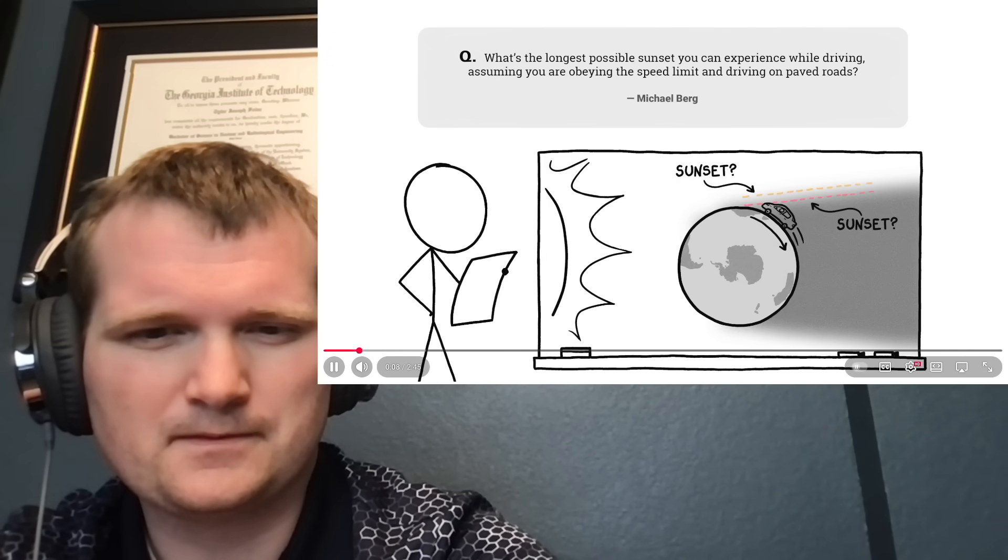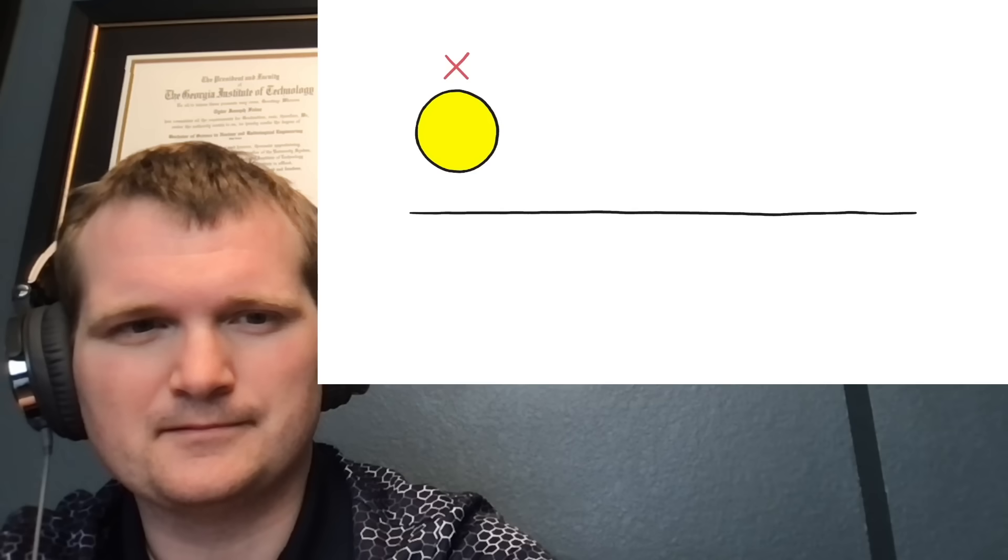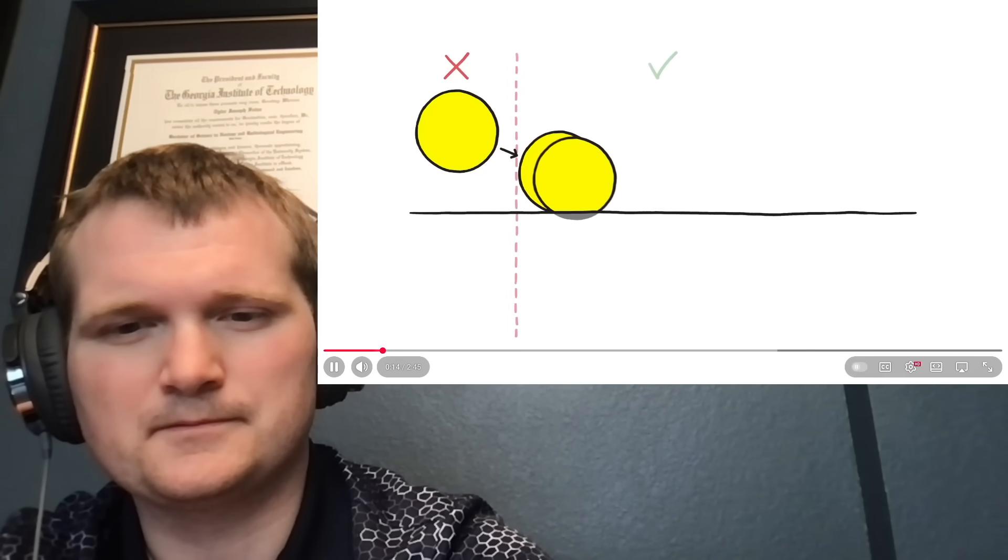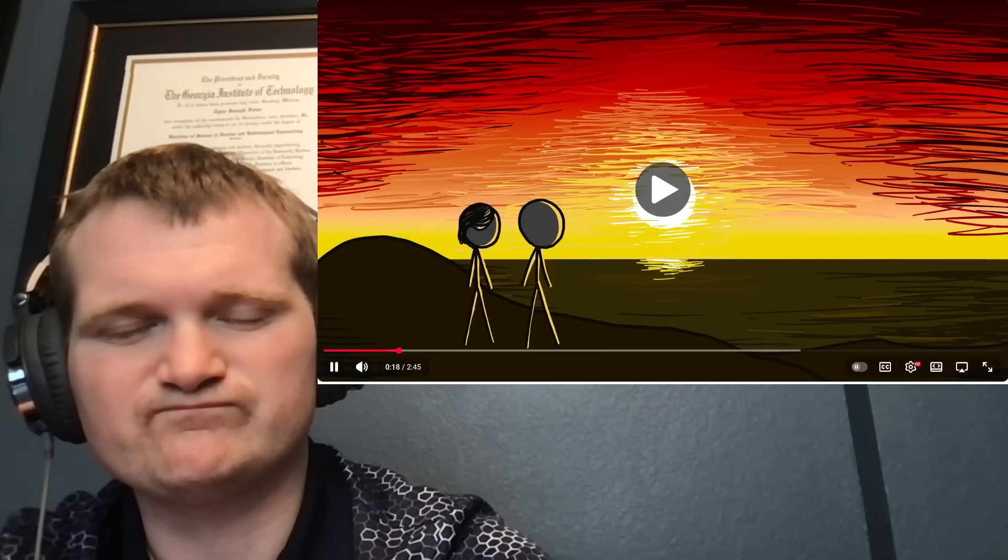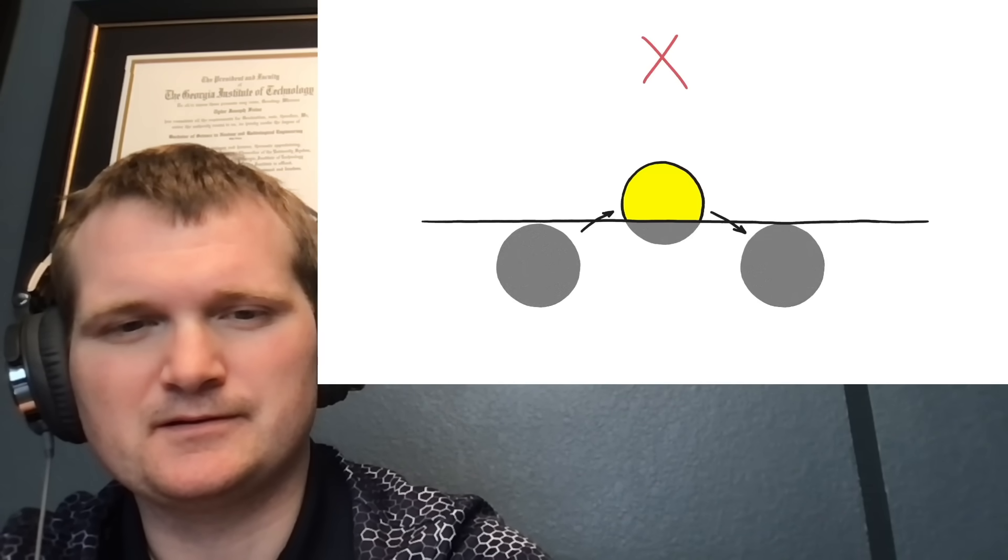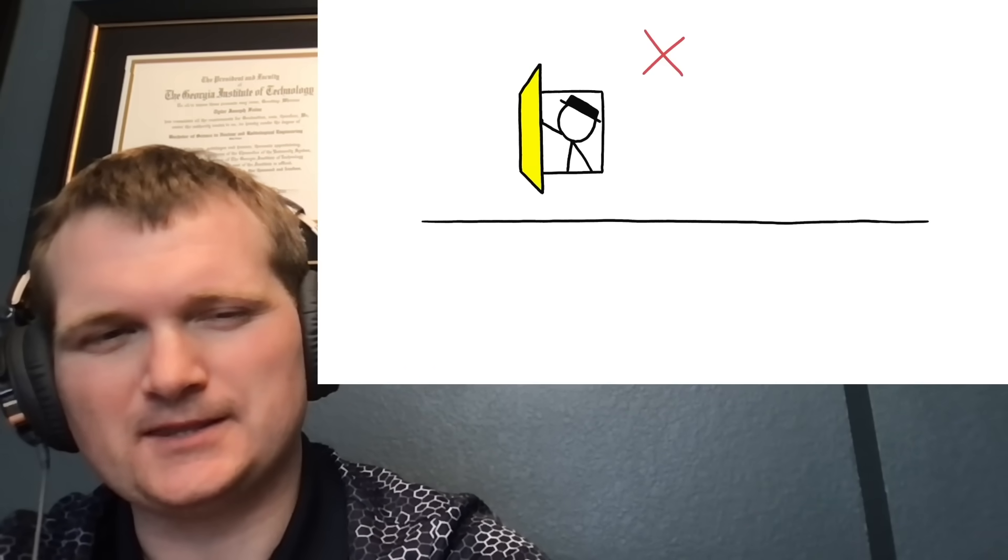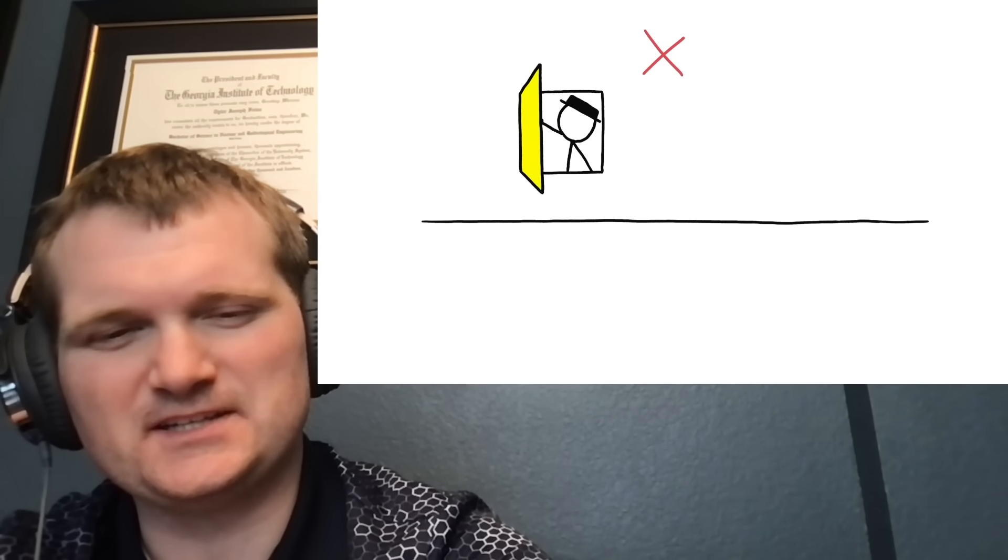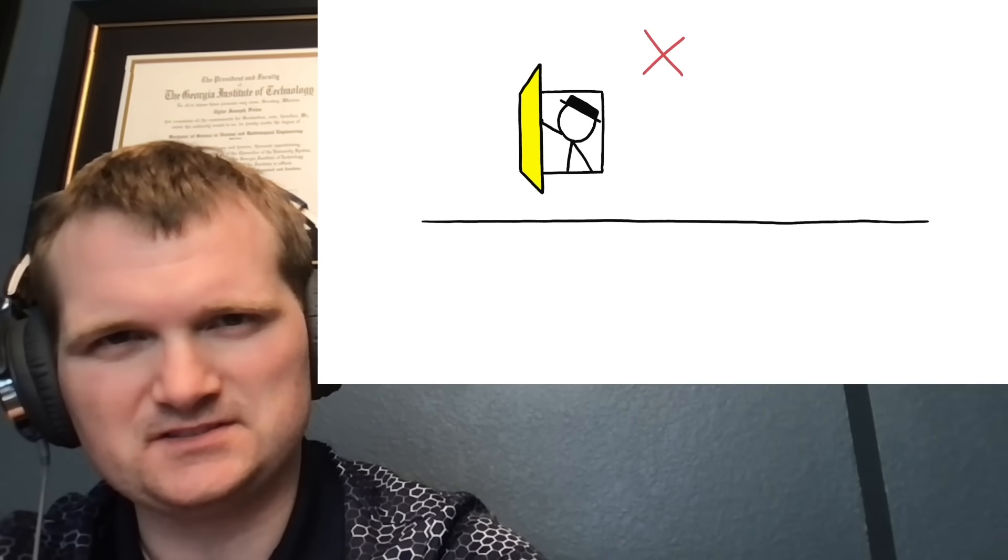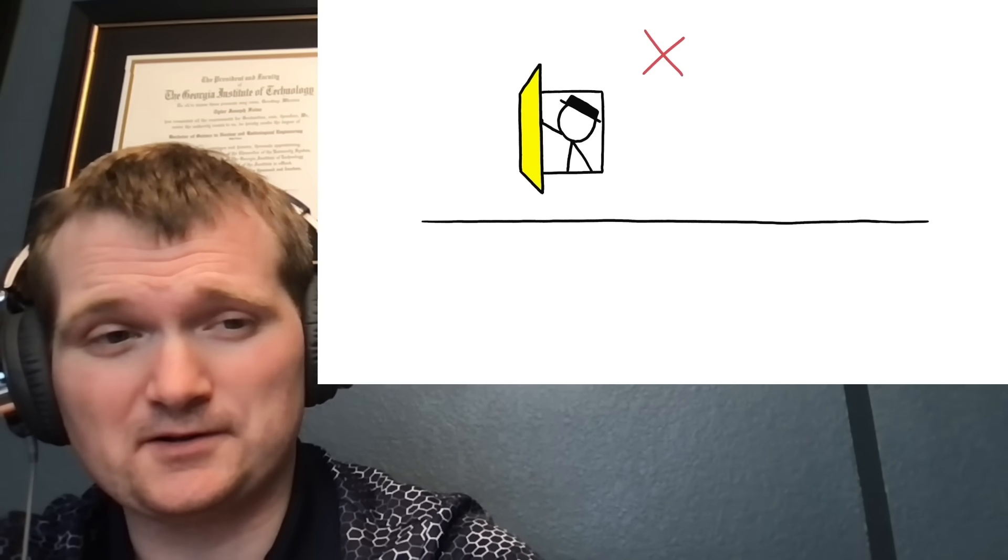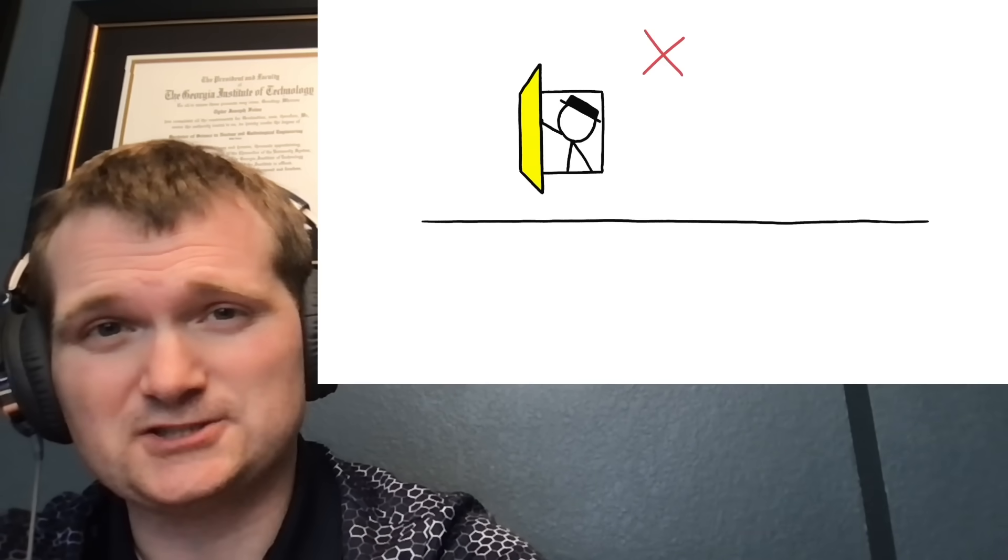To start, we have to define what we mean by sunset. For the purpose of our question, sunset starts the instant the sun touches the horizon and ends when it disappears completely. I like that they're getting the boundaries clear. It's the first thing you do before you model a system. You define your boundary conditions. Because after all, without that, your model or your answer to this question is complete and utter garbage. Same thing we do in reactor kinetics.